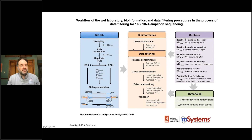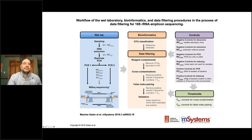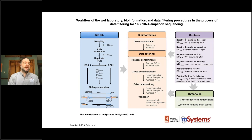The bioinformatic step involves OTU classification. This is an area of microbiome research where we've seen a lot of advances, including data filtering, filtering out cross-contaminants, false inserts, etc. One important practice when doing amplicon-based sequencing is to include a lot of controls — negative controls and positive controls.